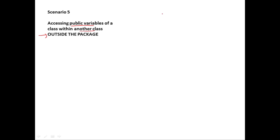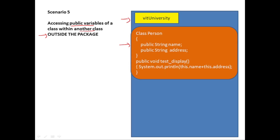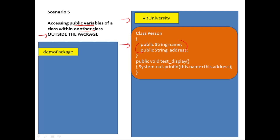Now let's take a look at scenario number five: accessing public variables of a class within another class that's actually outside the package — so you have two different packages. We have the VIT University package with class Person and two public data members. Now we have another package called demo package with a class called DemoClass. We are trying to access the public data members of class Person from within a method of DemoClass. Can we really access it? The answer is yes — as long as it is a public data member, you can access it from anywhere.